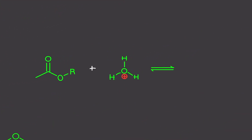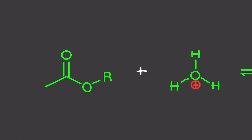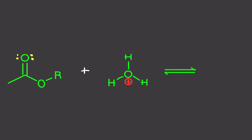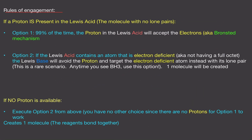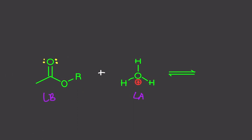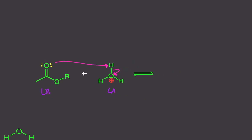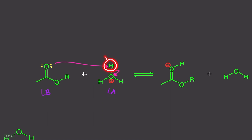Practice problem E: we've got protons here. The one with electrons is the Lewis base; the other, by default, is the Lewis acid because there are no electrons on it. Since we have protons available on the Lewis acid, execute option one. The electrons will target one of the protons — doesn't matter which one — break the bond, and we get two molecules: the conjugate acid-base pair. The hydrogen has now moved over, and we are only left with H2O on this side.